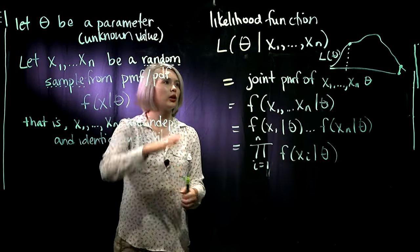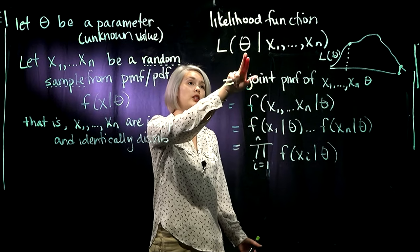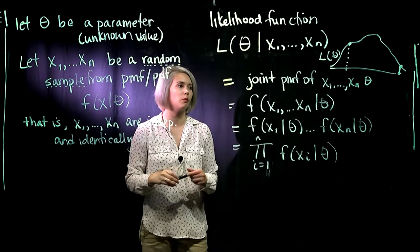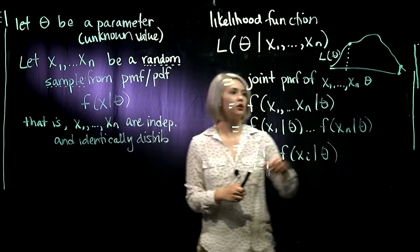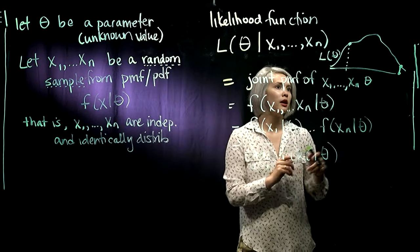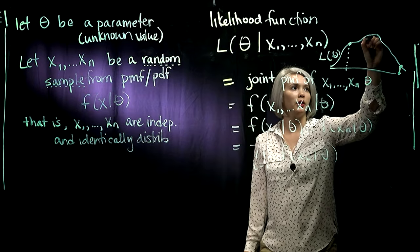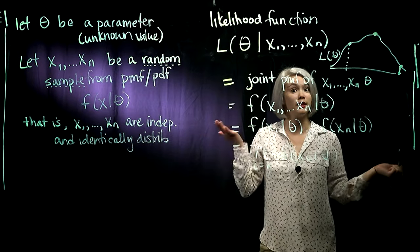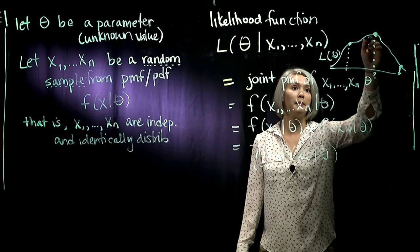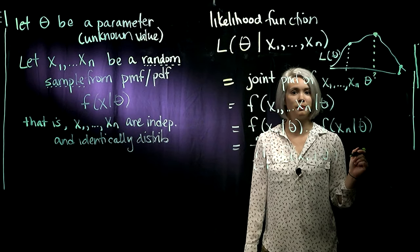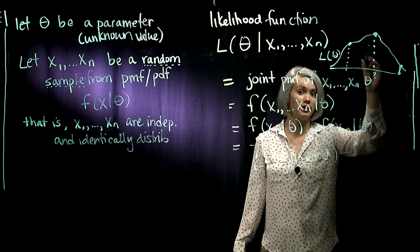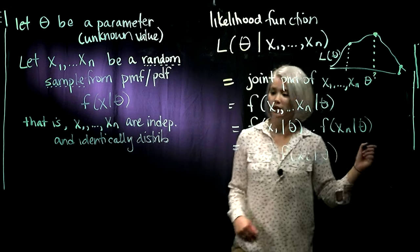So here's our likelihood function. Again, it's a function of theta given the data held constant. So if we look back to this little picture of our likelihood function, a logical thing to do would be follow this uphill and try to find the most likely value of theta. So we're wondering, what is this value here of theta that maximizes the likelihood function? So that value, that maximizer is called the maximum likelihood estimator.